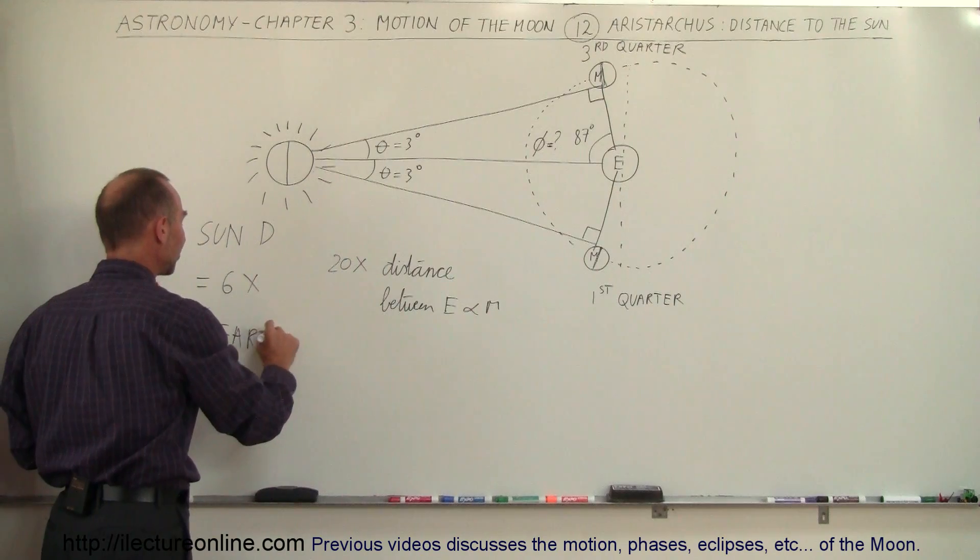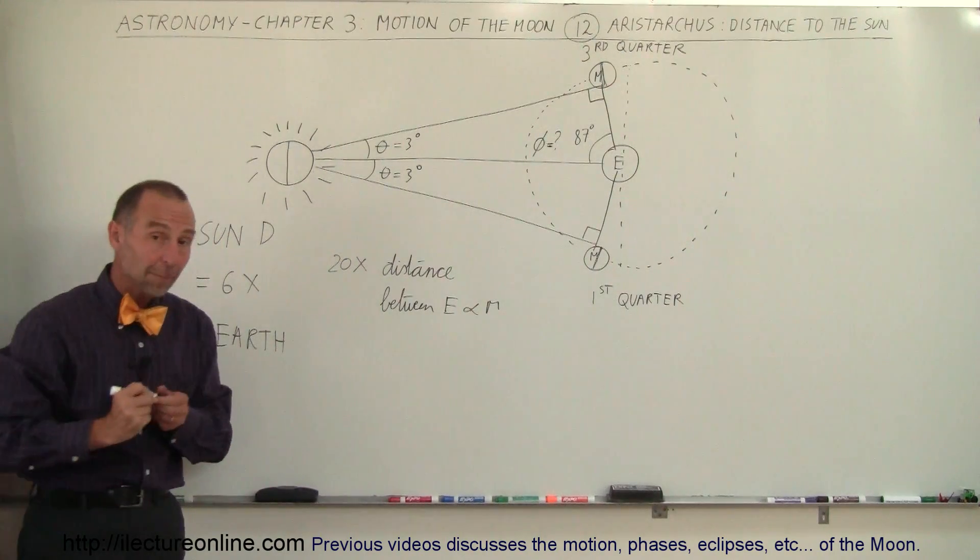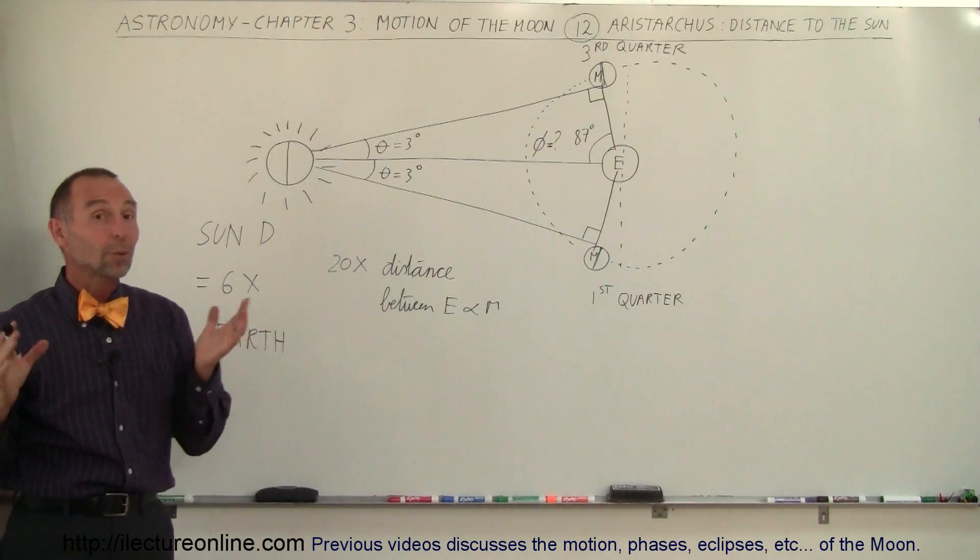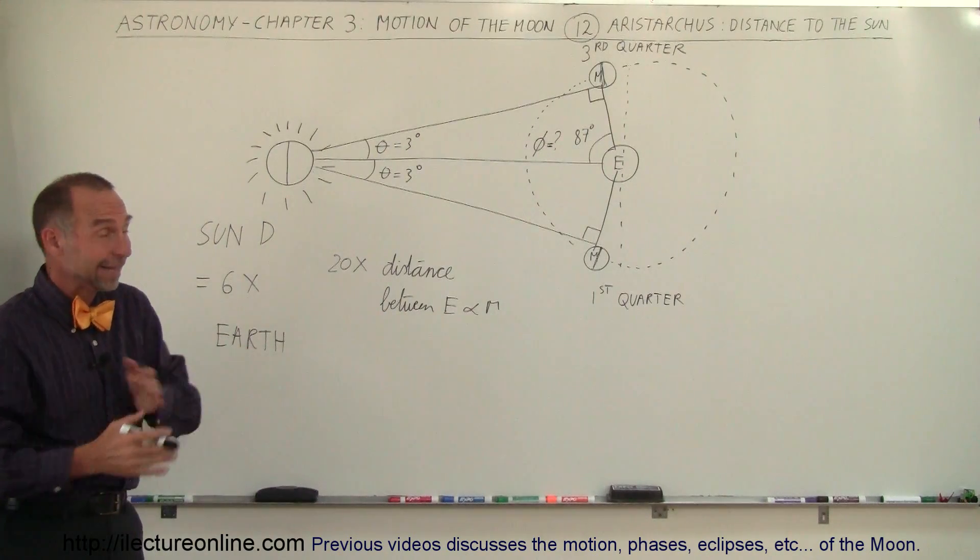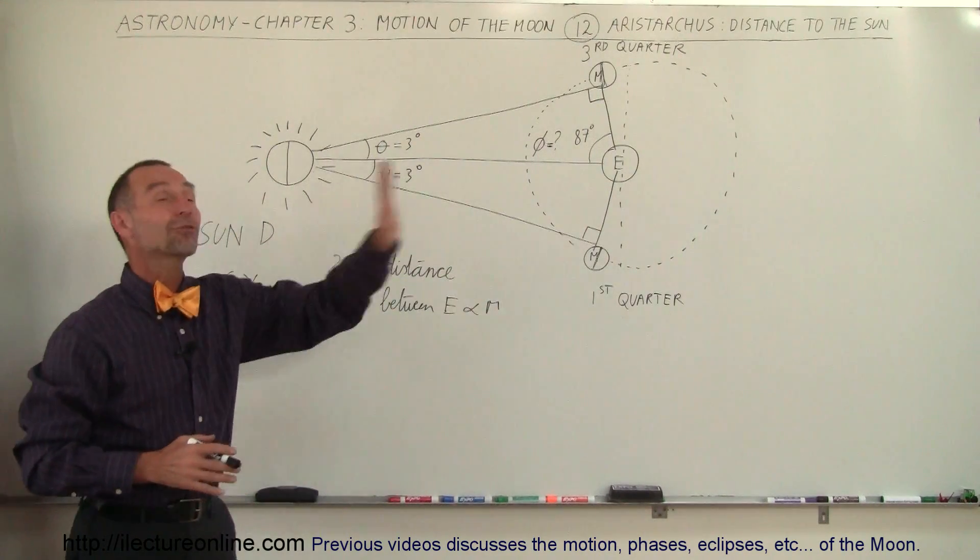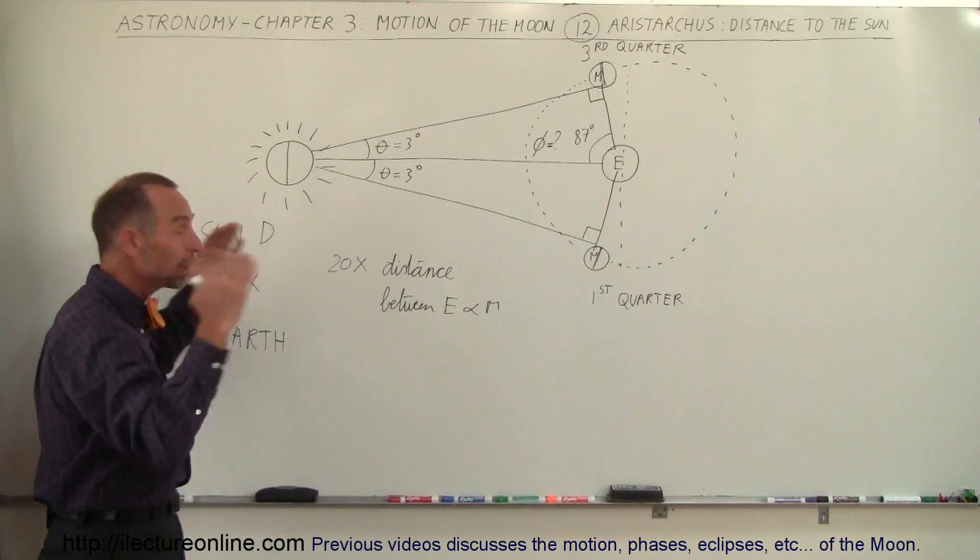So he figured that the sun was six times as big, at least in diameter, than the earth, which is again quite an accomplishment. They concluded it is far, far away, much farther than the moon, and it's much bigger than the earth.